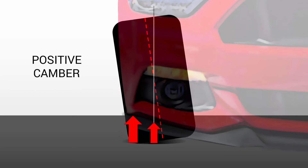And here is positive camber with the top of the wheel pointed out. Now more of the weight will be on the outside edge of the tire.